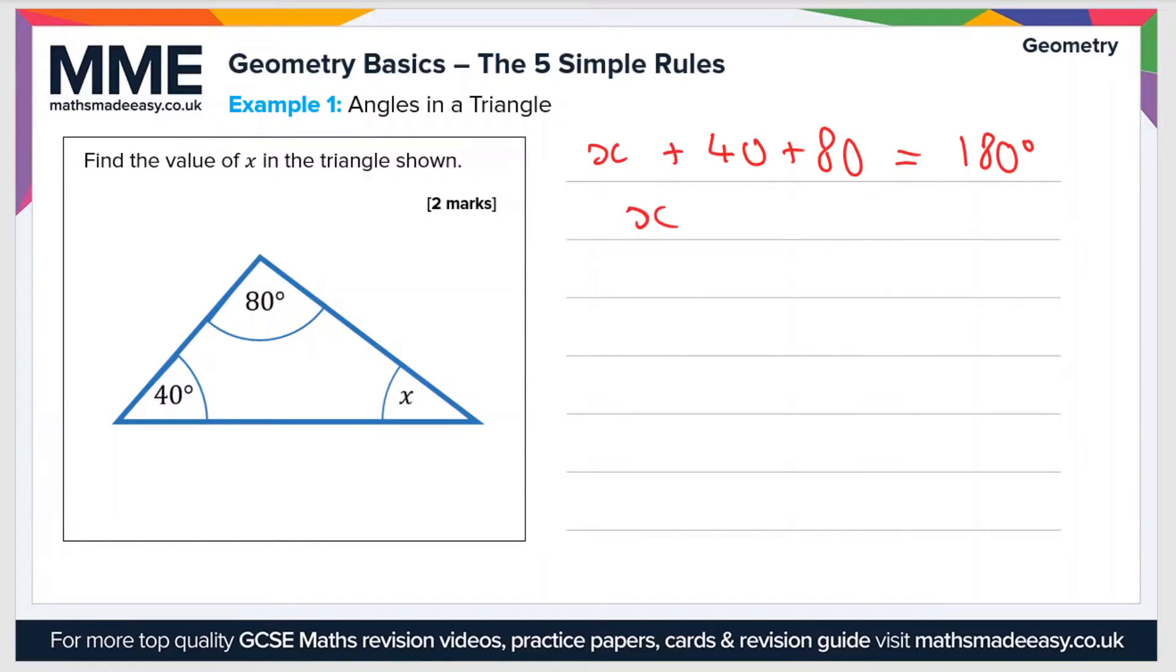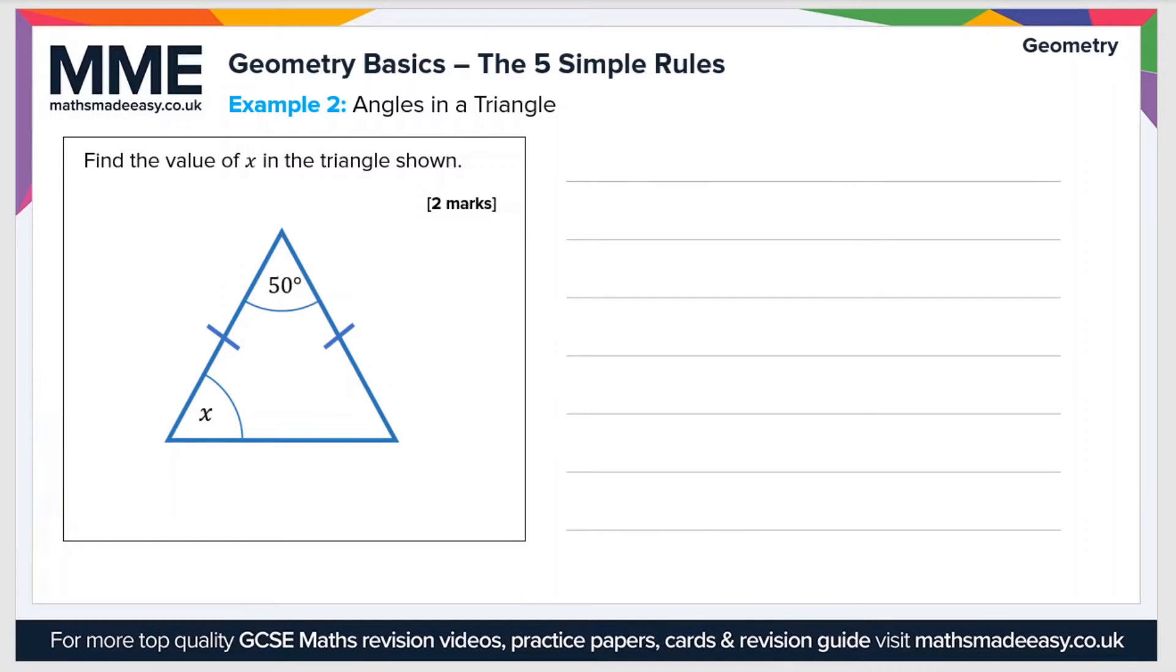So x equals 180 minus 80 minus 40, which equals 100 minus 40, so x equals 60 degrees.